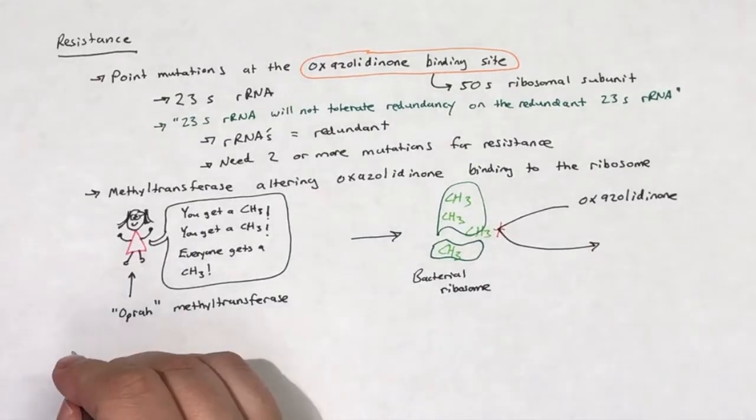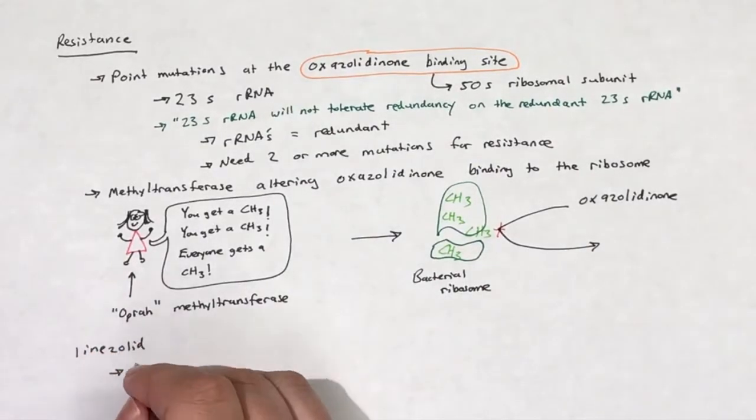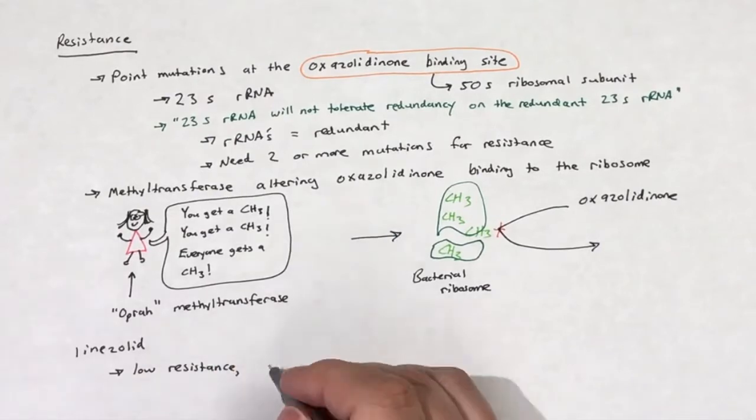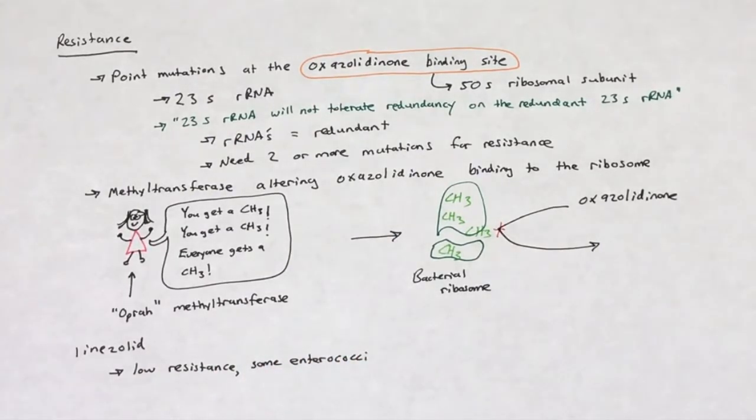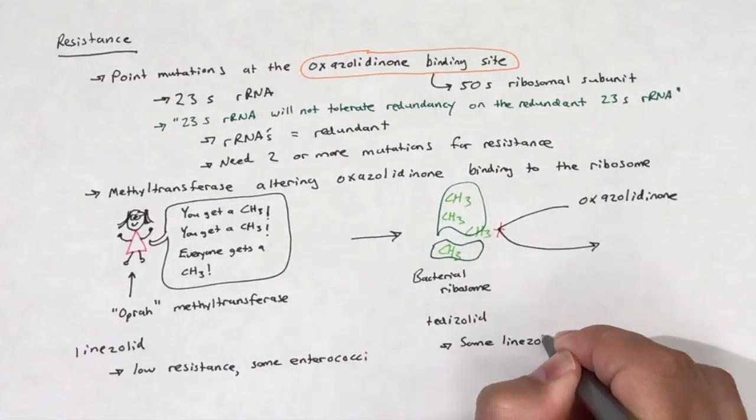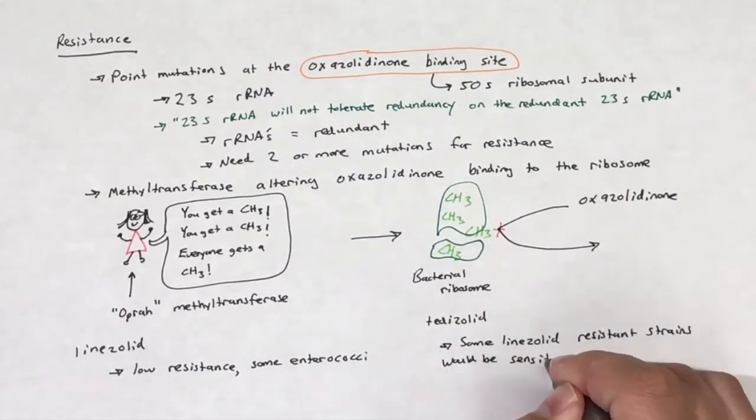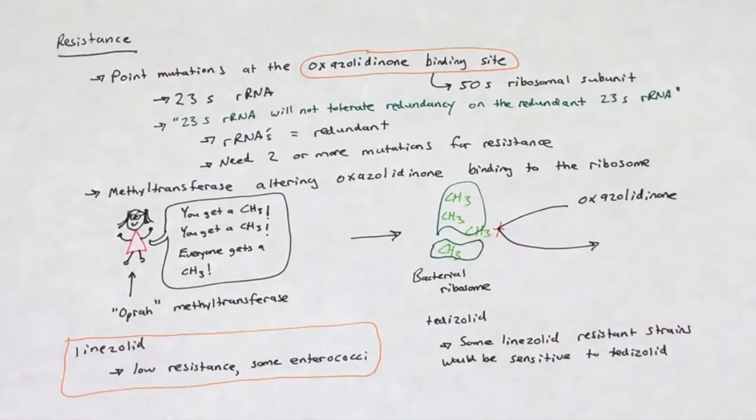Resistance to linezolid is low in susceptible bacteria. Despite this low resistance, some enterococci are beginning to show signs of resistance to linezolid. There is not much data surrounding resistance to tedizolid, but some reports suggest that linezolid-resistant strains would be sensitive to tedizolid treatment.